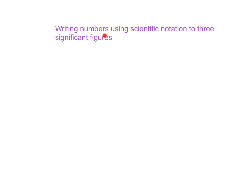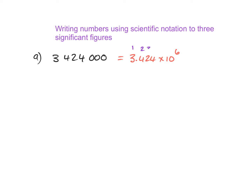Let's do some practice writing numbers using scientific notation, in this case to three significant figures. Looking at example A, the first thing we need to do is write it in scientific notation. Put the video on pause and come back when you're ready. You should have this as your answer. However, we've been asked to write it to three significant figures. Looking at our number, we have 1, 2, 3, 4 significant figures in this case.